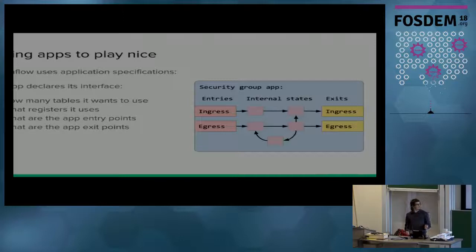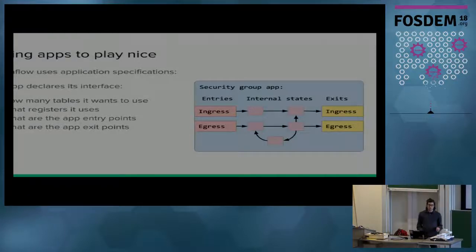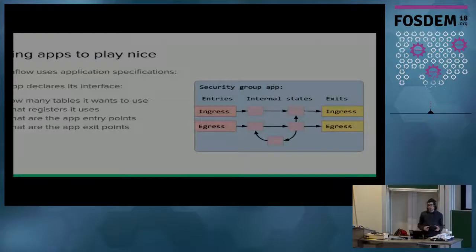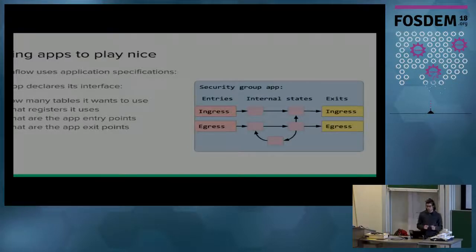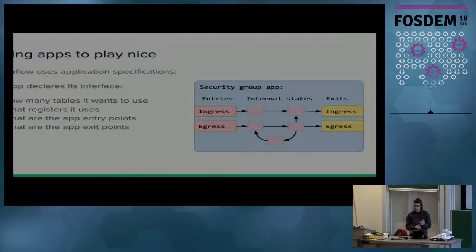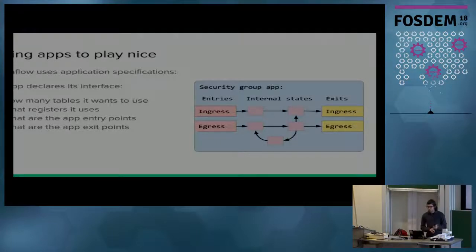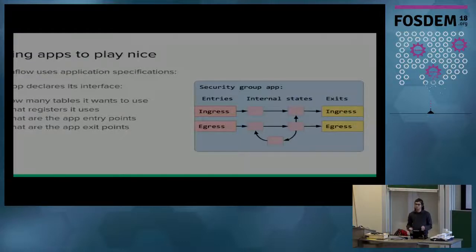We decided to introduce something called application specifications. Each application will specify what kind of interface it exposes toward the data path, effectively wrapping each application into a black box on the data path. The application itself is responsible for whatever happens inside its black box. The basic specification covers how many tables the application wants to use, what registers it will use to implement functionality, and what the application's entry points and exit points are.